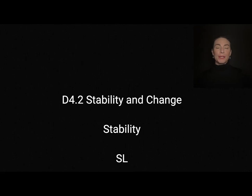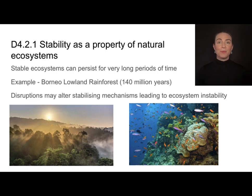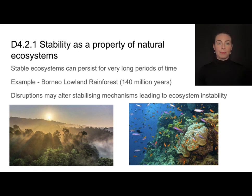This is the video for D4.2 on stability and change. We'll be covering standard level topics related to stability. Theme D is all about continuity and change, and continuity really relates to the stability of ecosystems. Stable ecosystems are ones that can persist for very long periods of time without changing into other types of ecosystems. For example, the Borneo lowland rainforest has been in existence for about 140 million years.